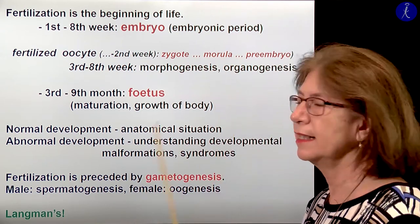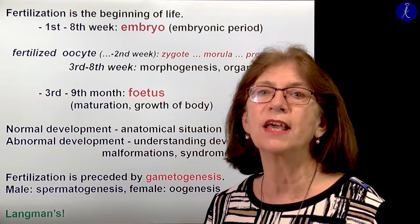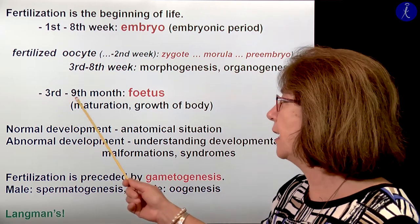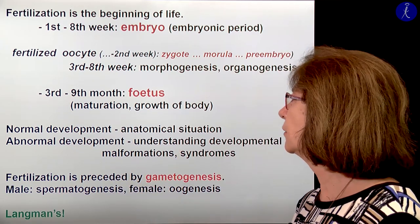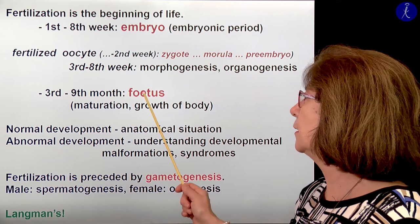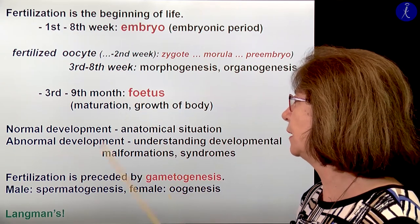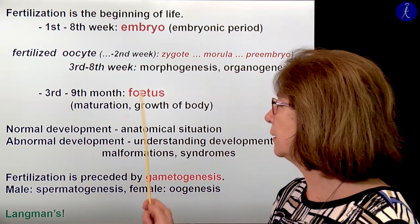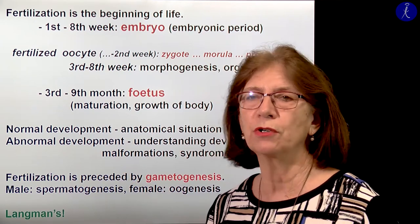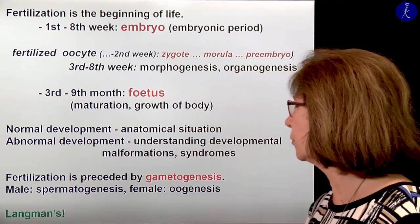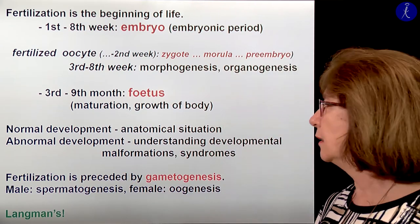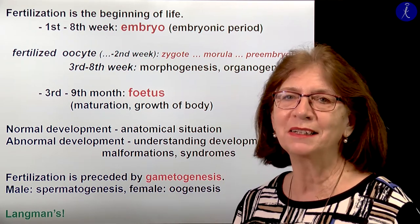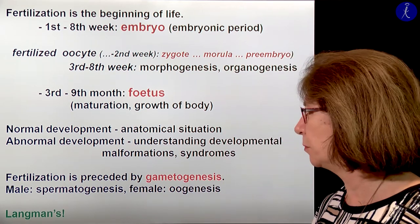At the end of the second month we already have the shape of a human baby. The third to the ninth month — that's the fetus, which in American English is sometimes spelled without an O. Through this period there is a maturation of the organs, further growth of the body, and at the end, if everything goes well, you have a healthy newborn baby.